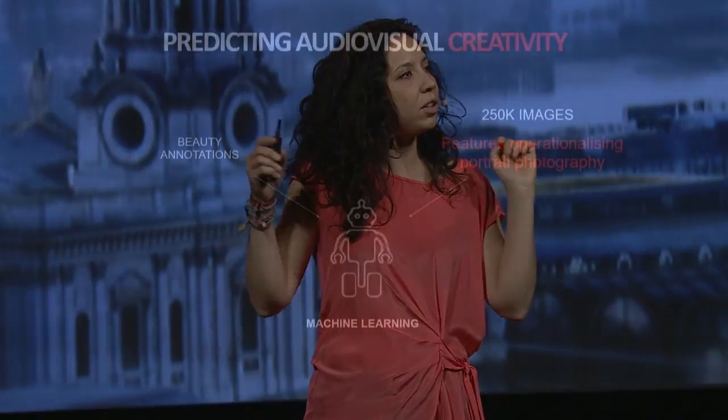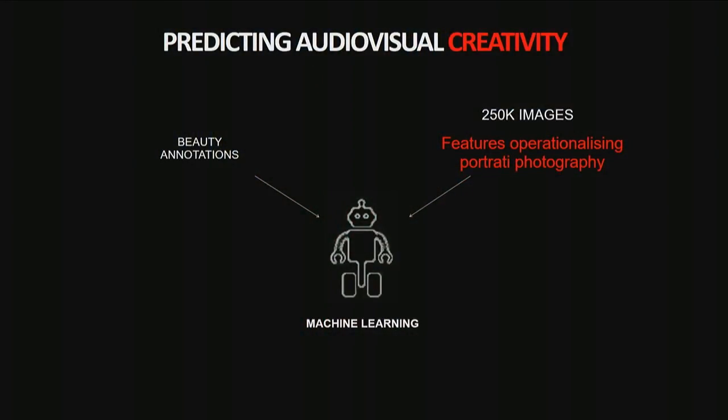What we did is take a large dataset of images annotated with beauty degrees by humans, and then design and compute features inspired by portrait photography. This means we map each of the rules that photographers follow to shoot good portraits into a visual feature — a number able to describe an aspect of the image. We then give all these features, built on top of deep learning frameworks, to a machine learning algorithm which can distinguish between good and bad portraits.